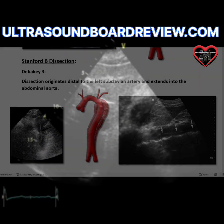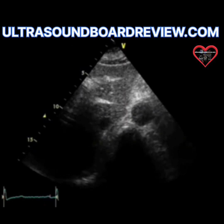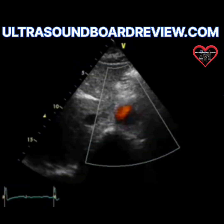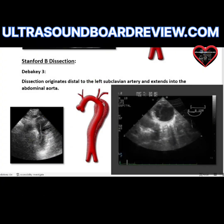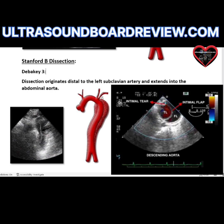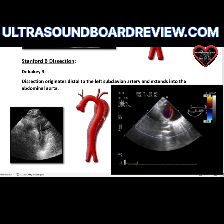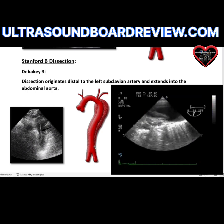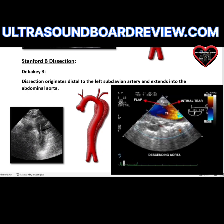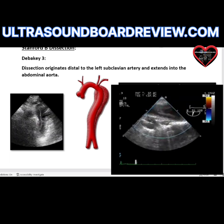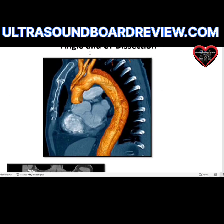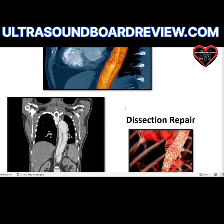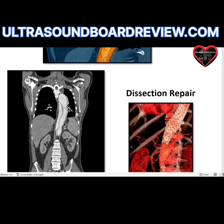Stanford B dissection has a subcategory of DeBakey 3. A DeBakey 3, or Stanford B, dissects below the left subclavian artery down into the abdominal aorta. These are the least dangerous of the two categories — not the most emergent of all dissections. The gold standard for finding and evaluating a dissection is a CT scan. It's the quickest way — you put them in the tube and you'll be able to see right away.